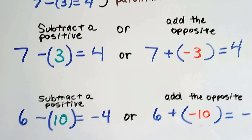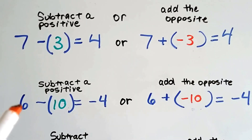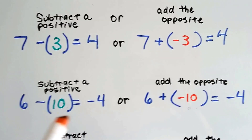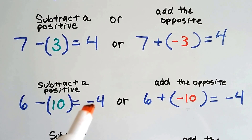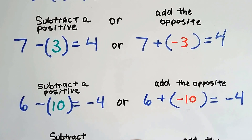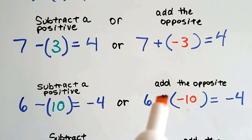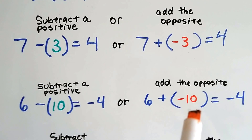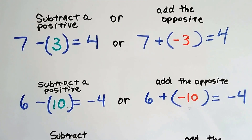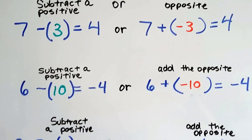We could subtract a positive, like 6 taking away a positive 10, and that's going to get us to a negative 4 on the number line. And we could add the opposite — instead of taking away a positive 10, we can add a negative 10. That still gets us to a negative 4.